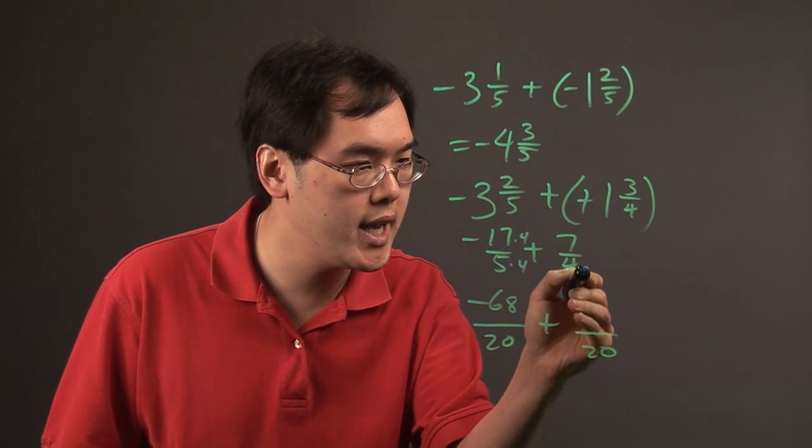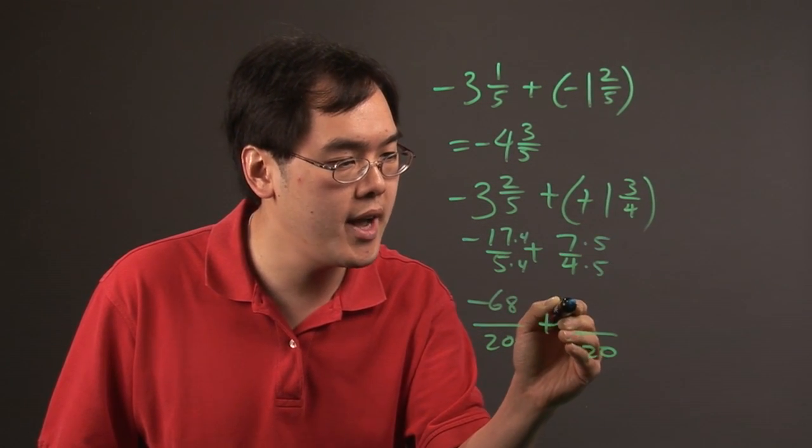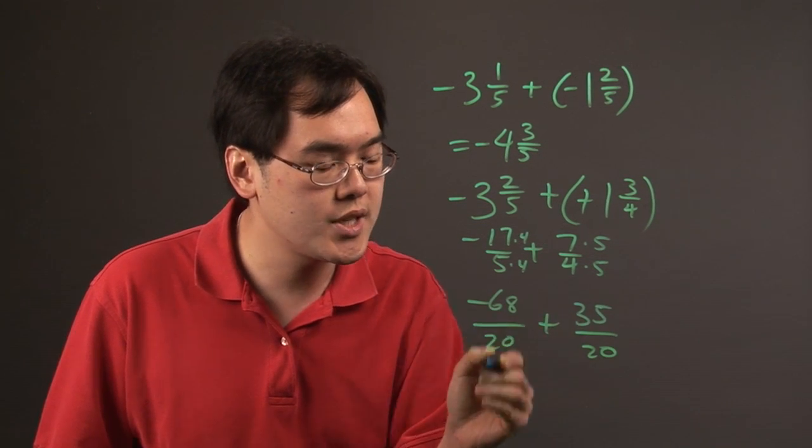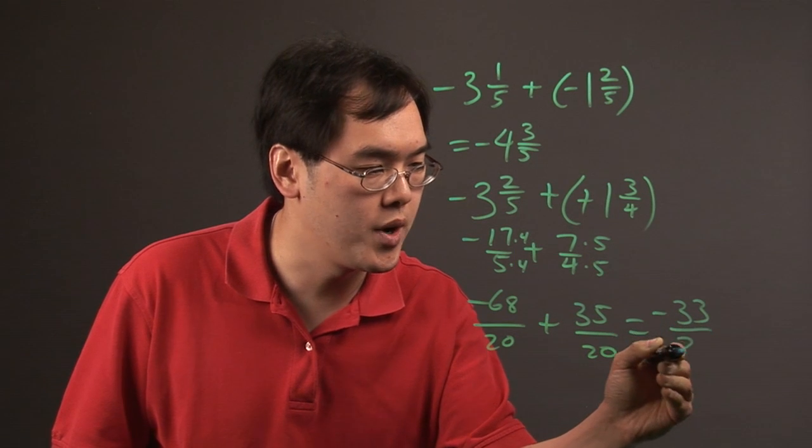And then four times five is going to be 20. So you multiply the top and bottom by five. So you have negative 68-twentieths plus 35-twentieths. You're going to get a grand total of negative 33-twentieths.